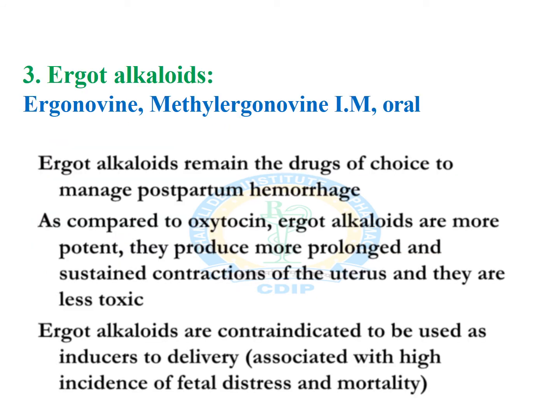Then come the ergot alkaloids — ergonovine and methyl ergonovine — available in intramuscular and oral preparations. They remain the drug of choice in managing postpartum hemorrhage over oxytocin. As compared to oxytocin, these are more potent agents and they show prolonged and sustained contraction of the uterus.